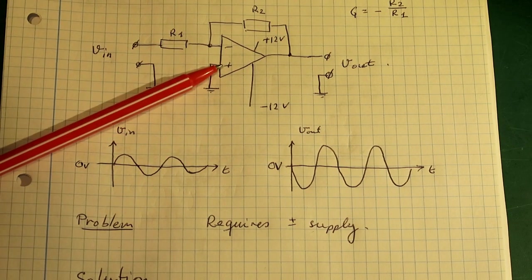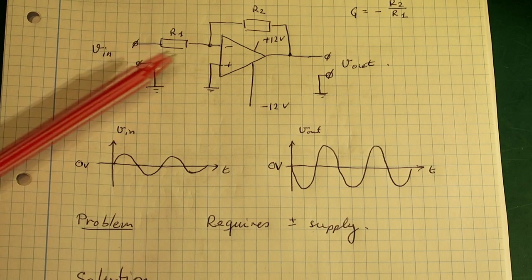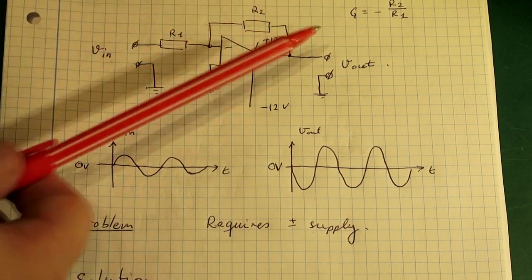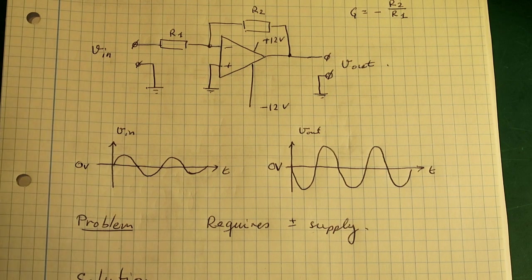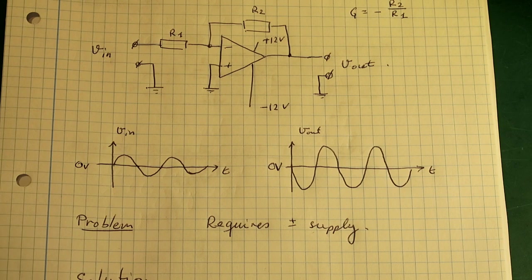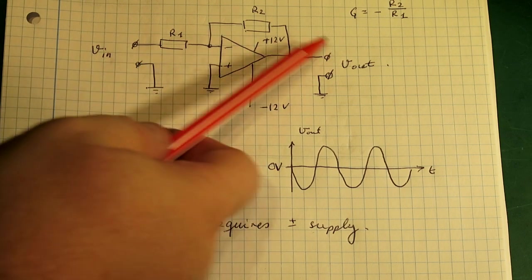So this is the basic amplifier here. It has zero volt on the plus pin. And because of the negative feedback there will also be zero volt here and here. And the output will be zero volt. So that is very nice. We have zero volt in and out.